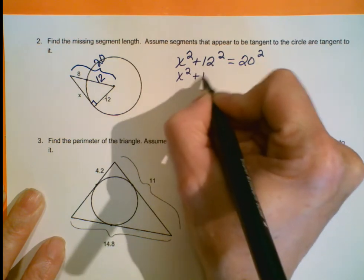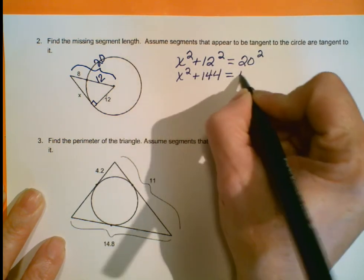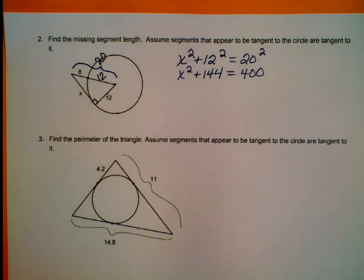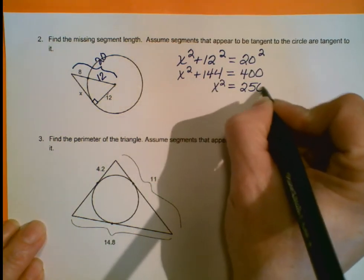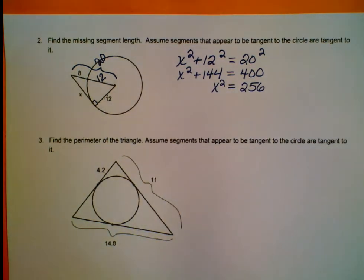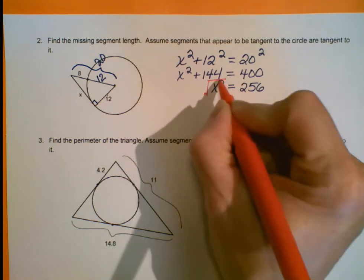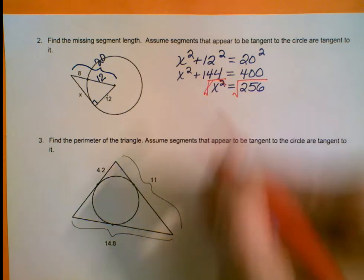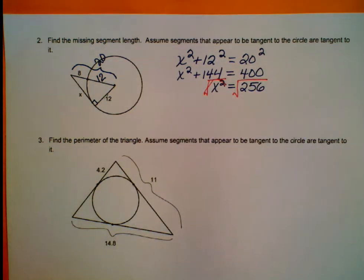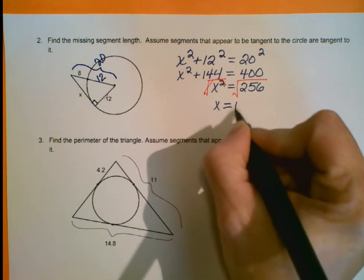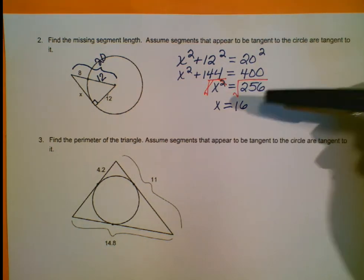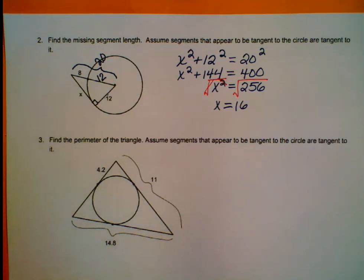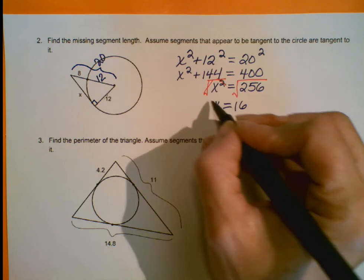Squaring those values: 12 squared is 144 and 20 squared is 400. Subtracting 144 from both sides gives X squared equals 256. Taking the square root of both sides, X equals the square root of 256. Since that's a whole number, we write it as such. The missing length X is 16.